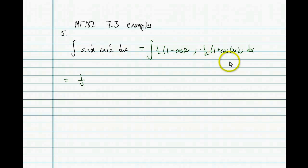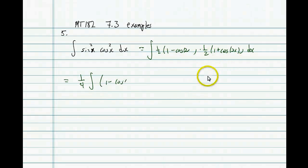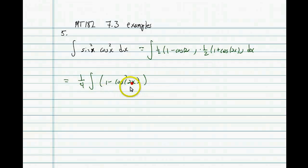We pull the one-half out — one-half times a half is a quarter — and multiply out these two binomials. Notice there's a difference of the same quantity, so we get one minus cosine of 2x, quantity squared.